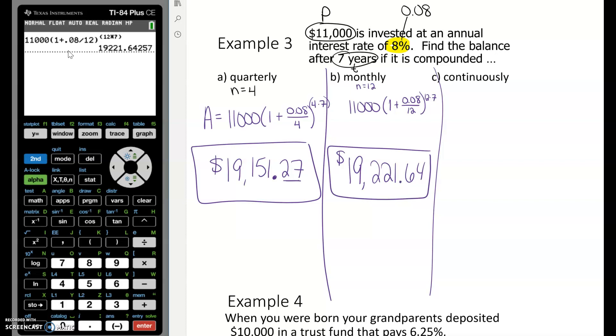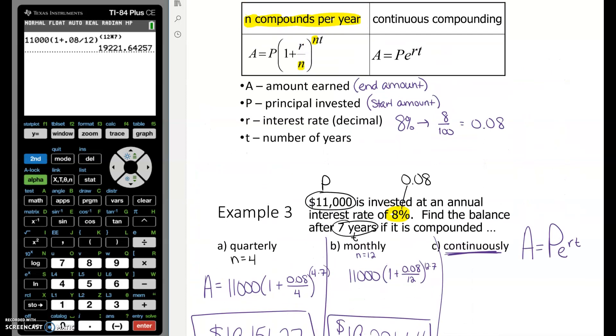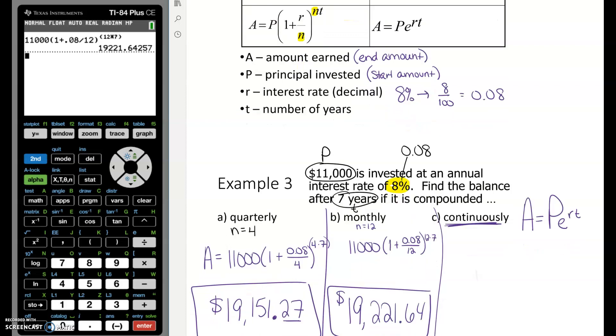Compounded continuously. The biggest question I get is, well, what is N if it says continuously? Like, do I use 10,000? Do I use a million? That's kind of where E came from. If you see the word continuously, that means that you're going to use what many of us refer to as the PERT formula. So if you look back at this formula list, N compounds per year, you use this formula with the divided by N and the NT. If it says continuous, that key word is continuous, continuously, you're going to use this PERT formula, P*e^(RT).